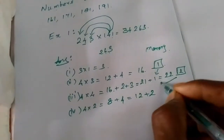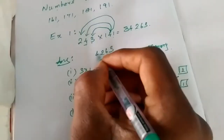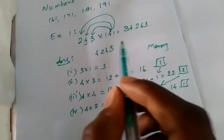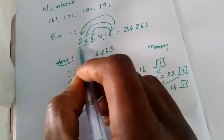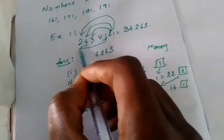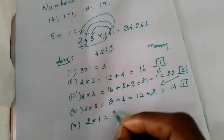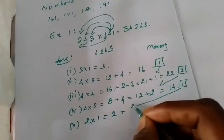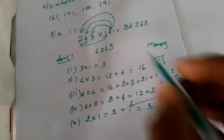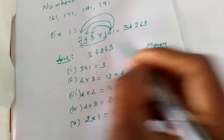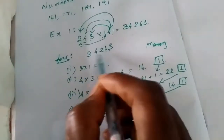Plus 2 in the memory, equal to 14. We add the number on the left side: 2 × 1 is equal to 2, plus 1 in the memory, equal to 3. So 3 here — we go, see the answer: 34263.